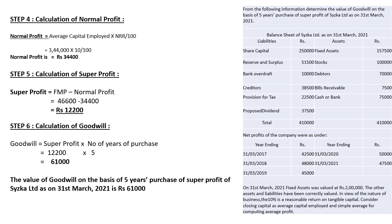Whenever solving the problem, it is important to write your answer in statement form. So write: 'The value of goodwill on the basis of five years' purchase of super profit of Cycle Limited as on 31st March 2021 is 61,000.'